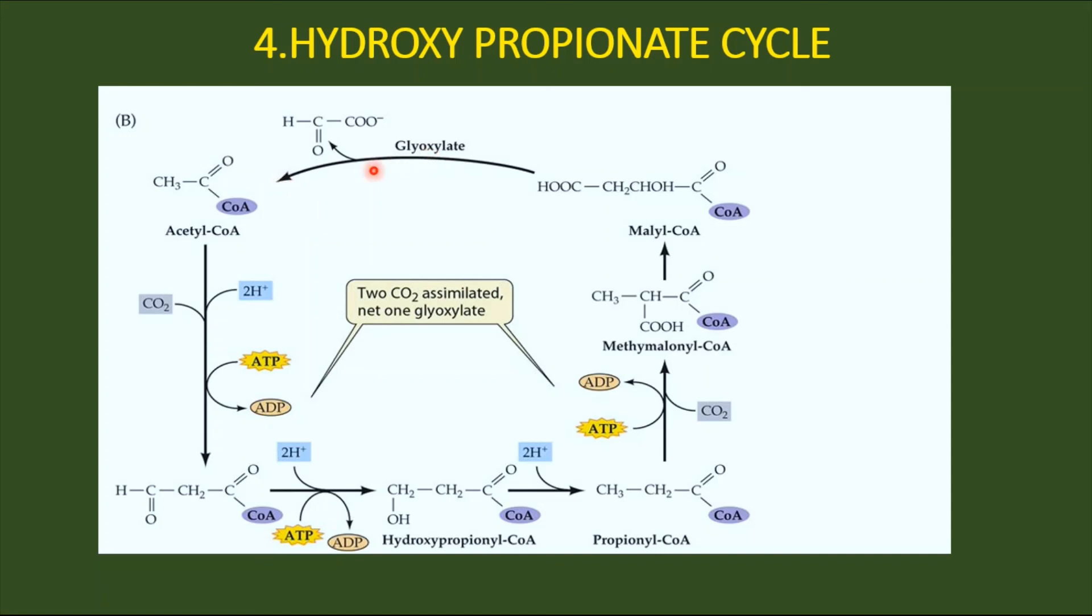This is a simple discussion about the hydroxy propionate cycle pathway, which is majorly seen in a type of bacteria called Chloroflexus. That's all about the complete topic of bacterial photosynthesis. Thank you.